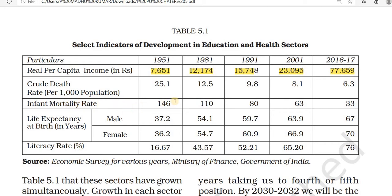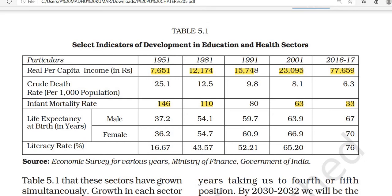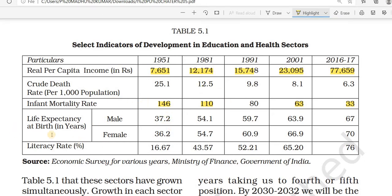The infant mortality rate refers to deaths of small children between 0 to 6 months. In 1951 it was 146, in 1981 it was 110, in 1991 it was 63, and in 2016-17 it became 33. This reduction is a good symptom of development. Life expectancy at birth — meaning how many years one person will live — was 37.8 for males and 36.2 for females in 1951.